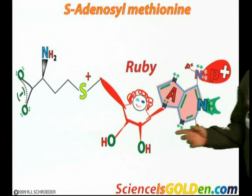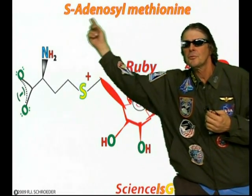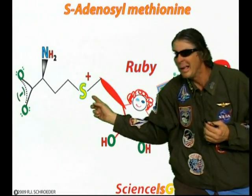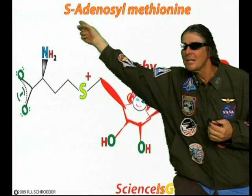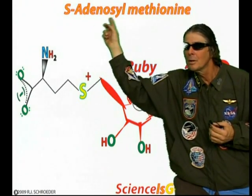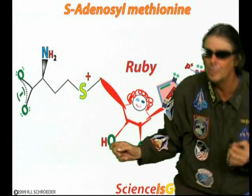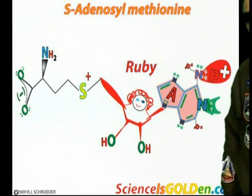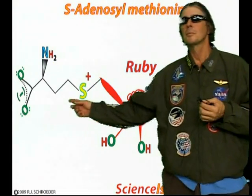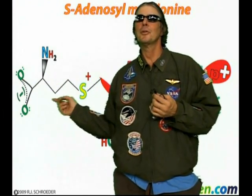This is where I found a key to my cartoon characters. This is S — what do you think the S is for? Sulfur. Adenosine. Ruby ribose — ruby's red. What does ruby ribose hold on to? Adenosine. This is a nucleic acid used as an enzyme cofactor. Sulfur.